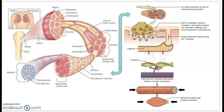Here we have the breakdown of muscle tissue. We can see that the fascia goes into the fascicles, and the fascicle is broken down into muscle fibers or muscle cells. The muscle cells are broken down even further into myofibrils, which is what we'll be talking about today.